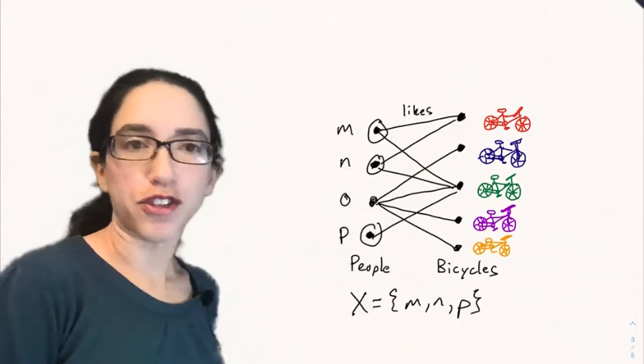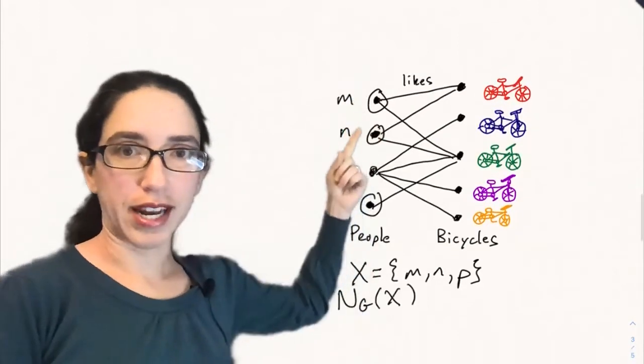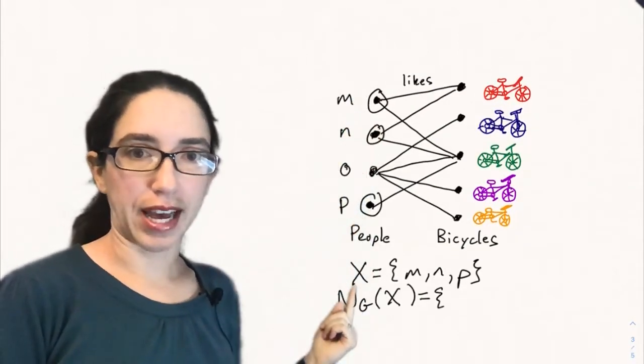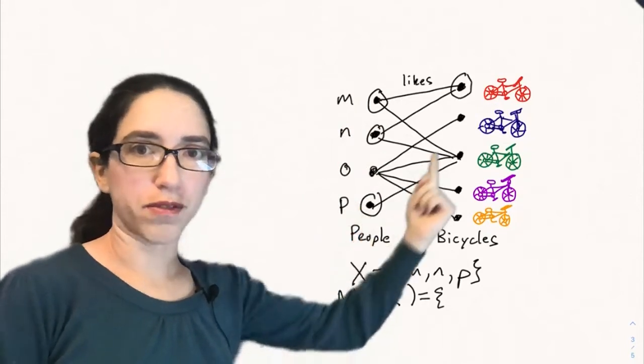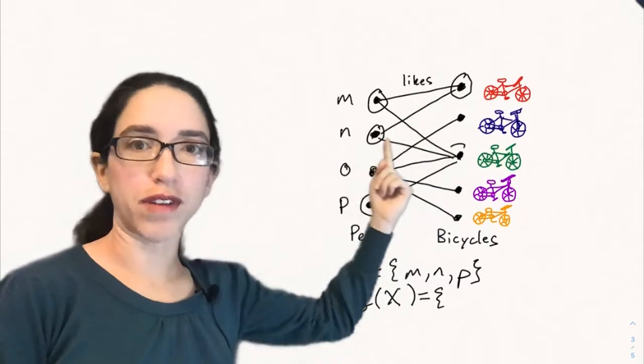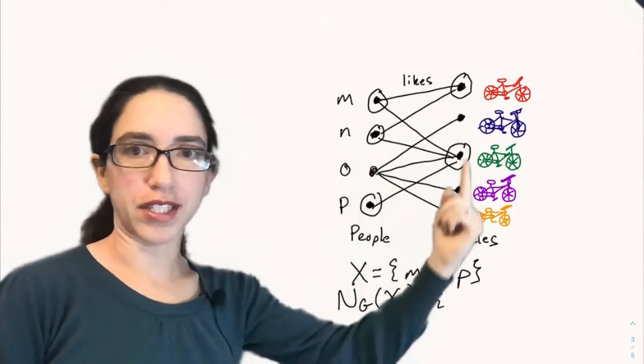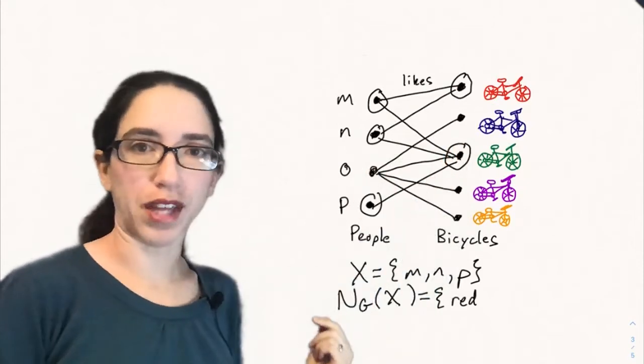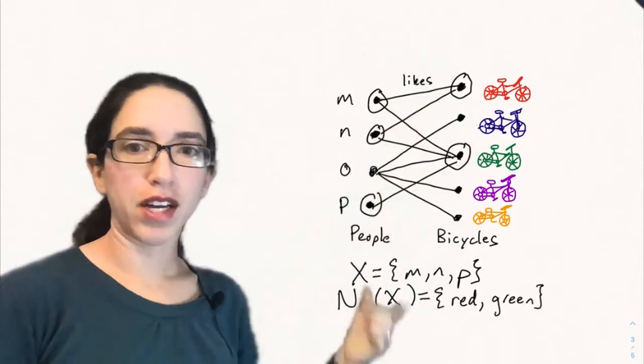But it turns out that this graph doesn't satisfy that condition for Hall's marriage theorem. So if you take the set M, N, and P, that's X, let's look at the neighborhood of X, all the vertices that are adjacent to one of M, N, or P. So the red and the green vertices are the only ones that share an edge with M, N, and P. And so the neighborhood is just red and green.